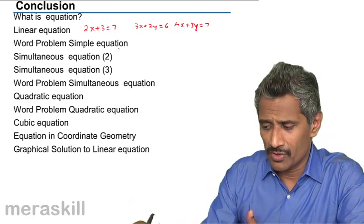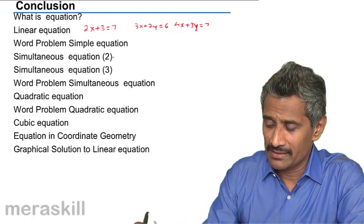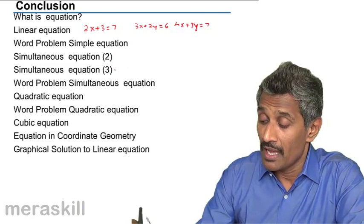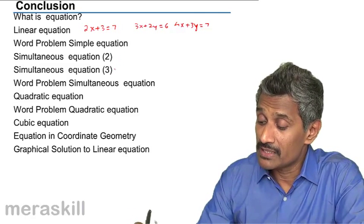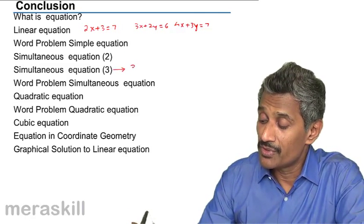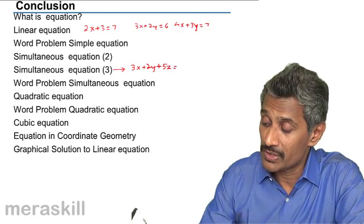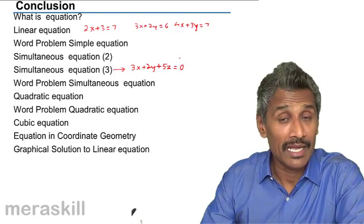We did word problems based on simple equations of this kind, simultaneous equations we did of this kind, and we also did simultaneous equations with three variables: 3x plus 2y plus 5z is 0. If you remember, I had told to solve such equations we need minimum three equations because there are three variables.